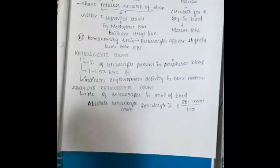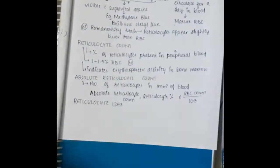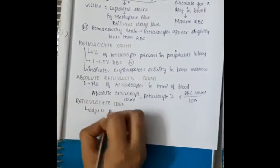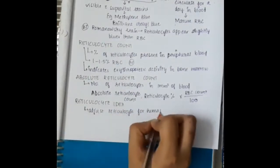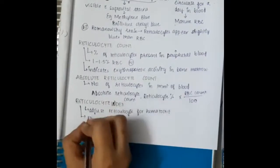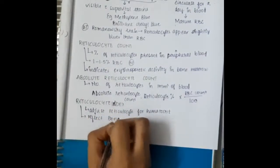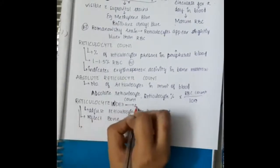Then we have reticulocyte index. Reticulocyte index is also called poor man's bone marrow aspirate. In reticulocyte index, we adjust reticulocyte for hematocrit, and this reflects bone marrow activity.